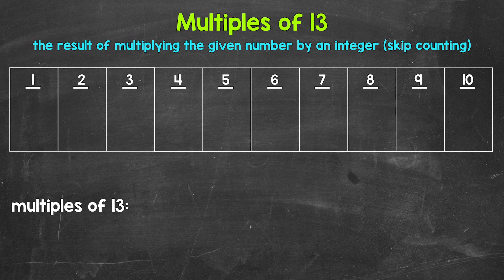So one times 13, two times 13, three times 13, so on and so forth. Another way to think about multiples is to skip count — all of the numbers something is going to hit when counting up by that number. Those are all going to be multiples.